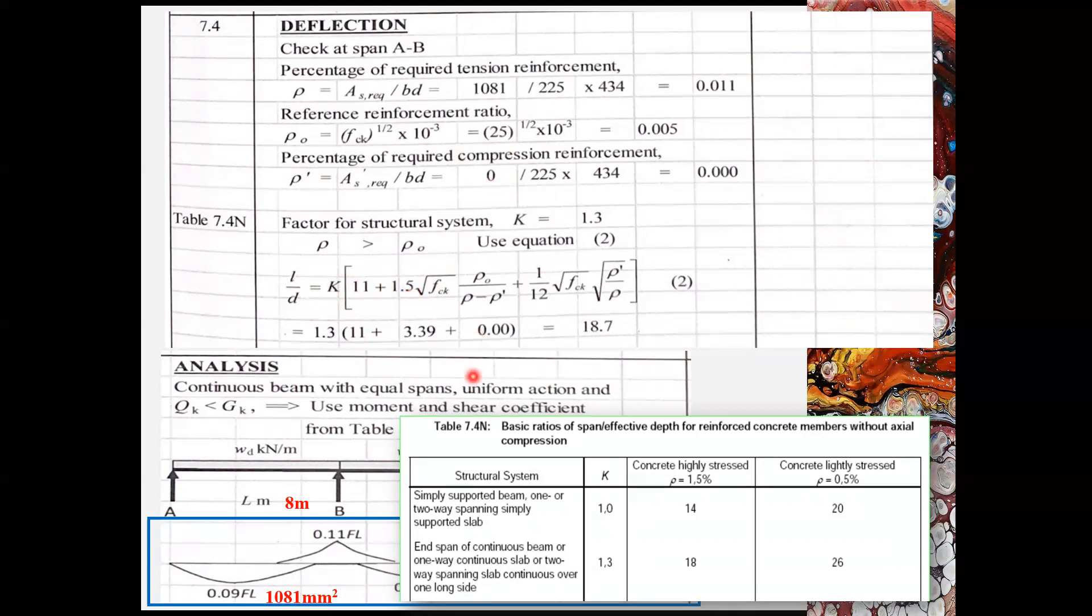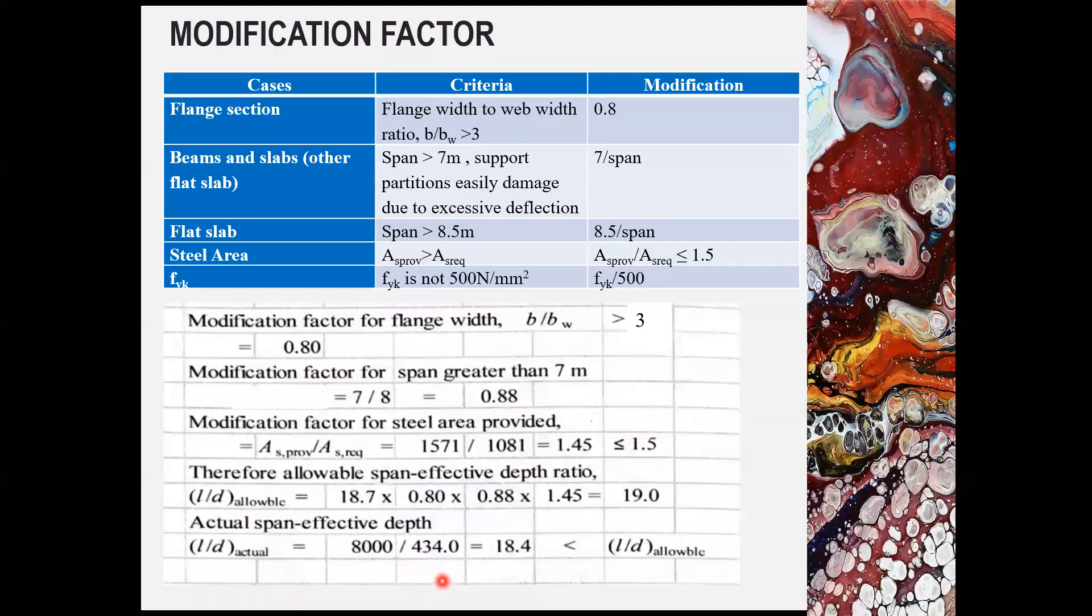Alternatively, you can also utilize table 7.4N to determine the l over d. For example, in this case, you are aligned with the end span of continuous beam. So you are looking at this particular row of data. So you can obtain your l over d based on your row value. You can do the interpolation in between these two values, which is within the row equal to 1.5% and the row is equal to 0.5%. In your case, your row is 1.1%.